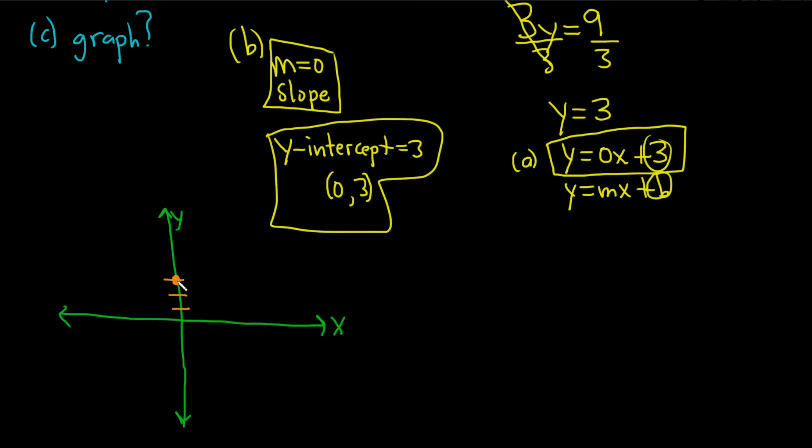And the slope is 0, so you rise nowhere, and then you can run as much as you want. If you think about it, 0 is the slope, and it's 0 over any number. So 0 over anything is equal to rise over anything not equal to 0.